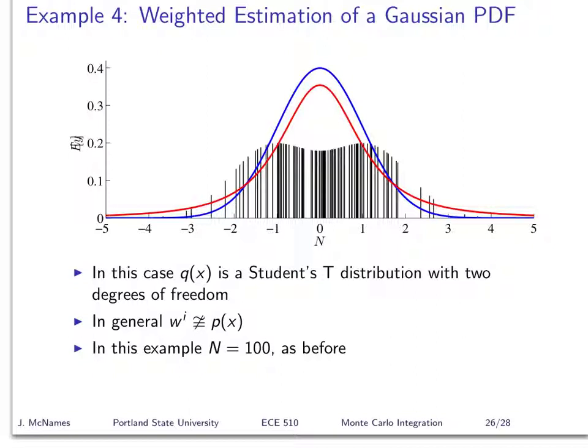The PDF that we're trying to represent is shown by the blue line. Our representation in this case, I chose an importance density shown by the red line. It's got heavier tails, so more samples are drawn out here than with the Gaussian. And fewer samples are drawn basically from where these cross, from here to here, it's lower. So it's sort of heavier tails and less peak than the Gaussian distribution.